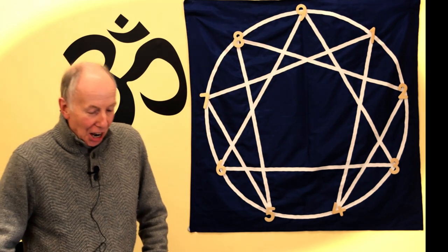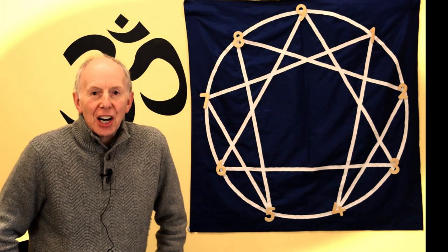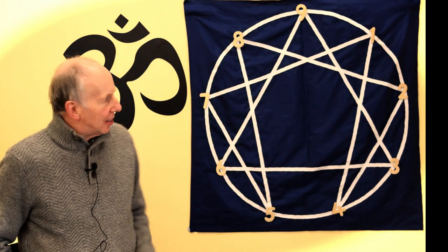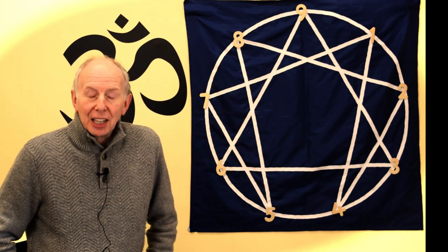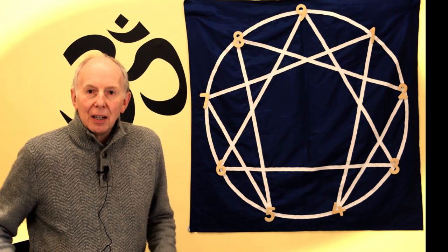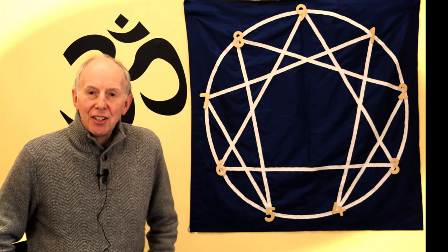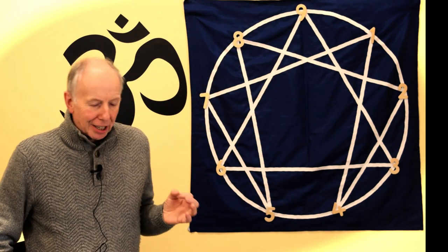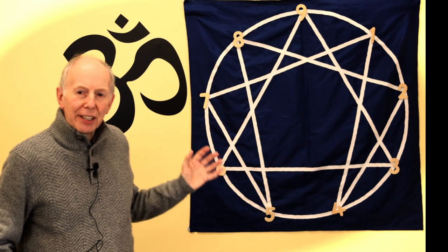For anybody that doesn't know, this diagram here is the Enneagram. The Enneagram means 'figure of nine' and you will see that in this representation there are nine numbered points around a circle, and each of these represents a personality type. Gradually over the coming sessions I shall be explaining more, delving into each individual type.